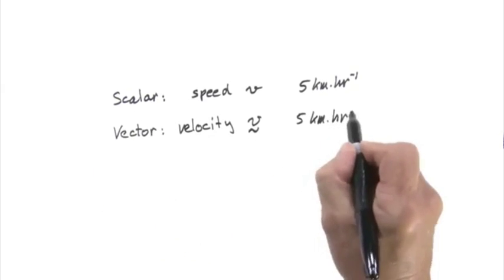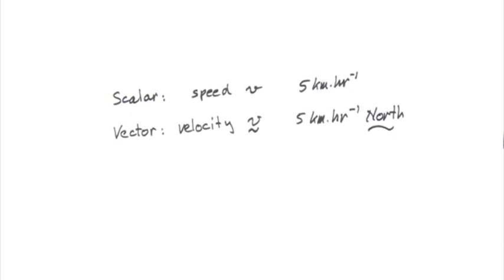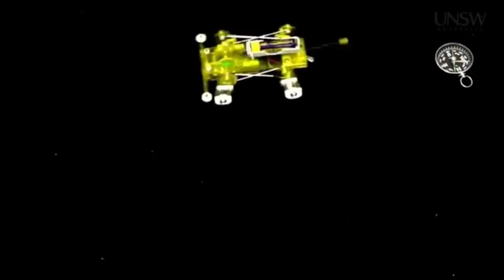Velocity is a vector. It has magnitude and direction. And direction is important. A velocity of 1 meter per second east is no good if you want to go north.